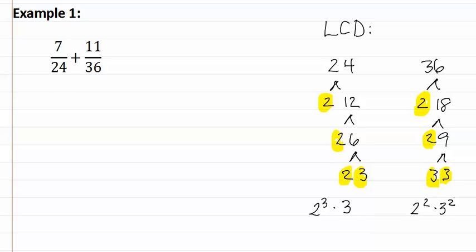To find the least common multiple or least common denominator, we write each of the unique factors and then choose the highest exponent of each. That would mean we'd have two to the third and three squared. We then multiply this out, where two to the third is eight and three squared is nine, which gives us seventy-two as our least common denominator.